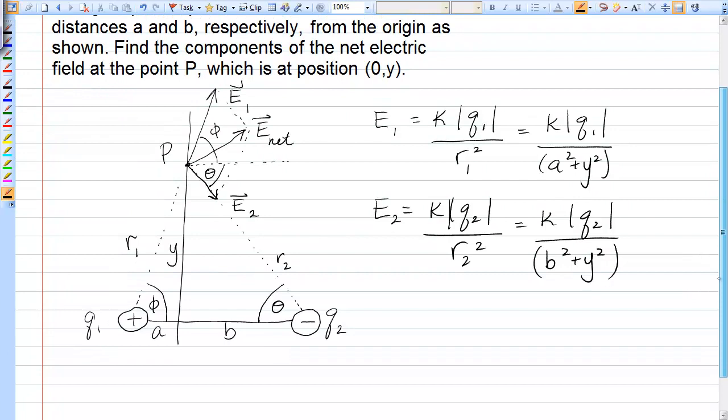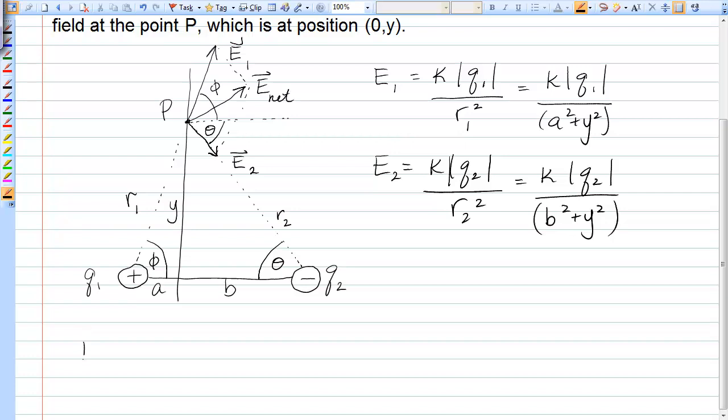Now, to get the components, I'm going to write these two electric field vectors in terms of their I hat J hat components. So E1 vector will be the magnitude K Q1 over A squared plus Y squared times the cosine of phi for the X component plus the magnitude times the sine of phi, J hat.